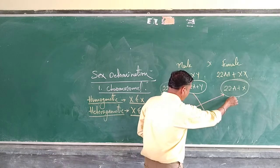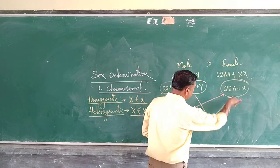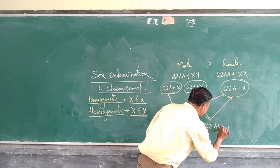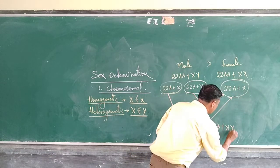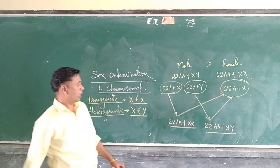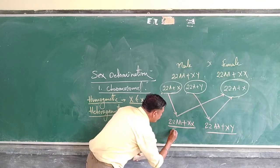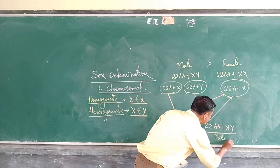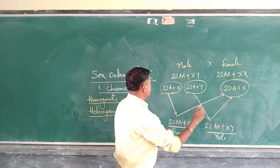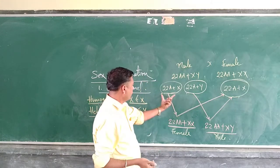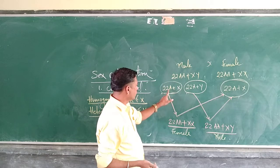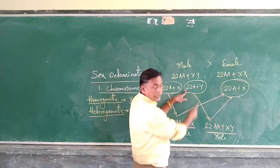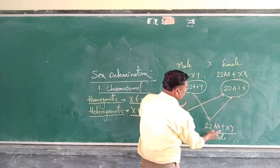If the sperm containing 22A plus Y fuses with the egg 22A plus X, it will become 22AA plus XY — which is male sex. So during fertilization, if 22A plus X sperm fuses with the egg it becomes female (22AA plus XX), and if 22A plus Y sperm fuses with the egg it becomes male (22AA plus XY).